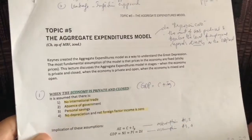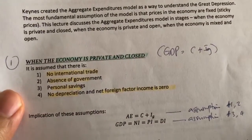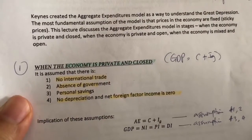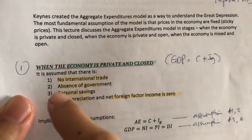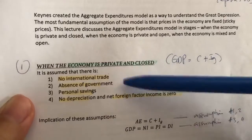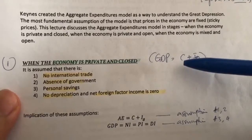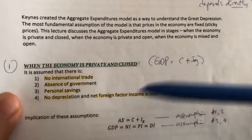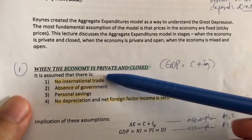Let's look at the first situation when the economy is private and closed. These are the assumptions: private simply means there's no government — hence 'absence of government.' Closed means there is no trading happening. So GDP is only C plus IG. There's no G, there's no XN — no government, no trade. Additionally, we assume there's only personal savings and there's no depreciation.